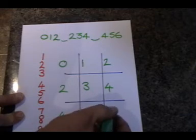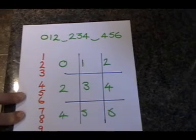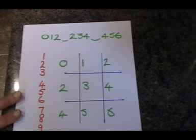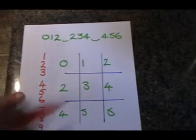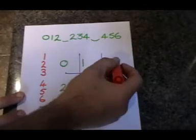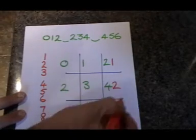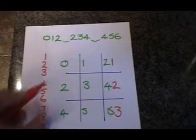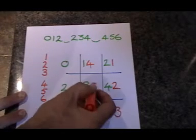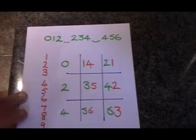So far so good, but here's where the magic happens. Look what happens when we put the three ladders into the three columns. Ladder number one: one two three. Ladder number two: four five six. Ladder number three: seven eight nine.